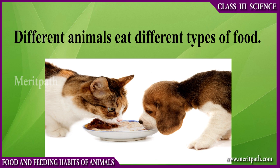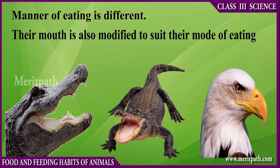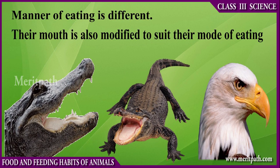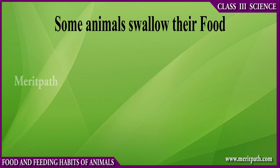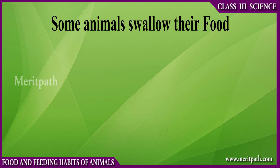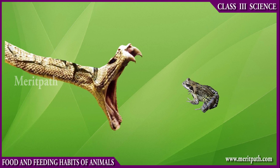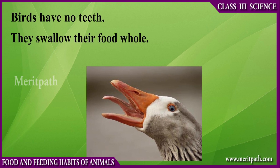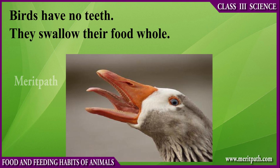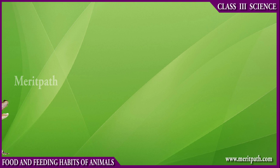How animals feed: different animals eat different types of food, so their manners of eating are different. Their mouths are also modified to suit their mode of eating. Some animals swallow their food. For example, birds have no teeth, so they swallow their food. Lizards and some snakes have very small teeth.